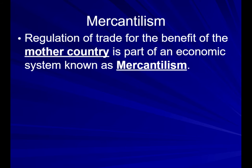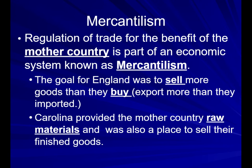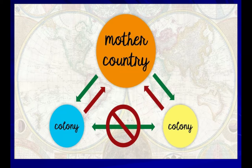This regulation of trade is called mercantilism — it's for the benefit of the mother country. The goal for England was to sell more goods than they buy. Carolina provided the mother country with raw materials and was also a place for them to sell back their finished goods. The mother country is the only one that colonies can trade between and buy from, not each other, and this allowed England to make lots of money.